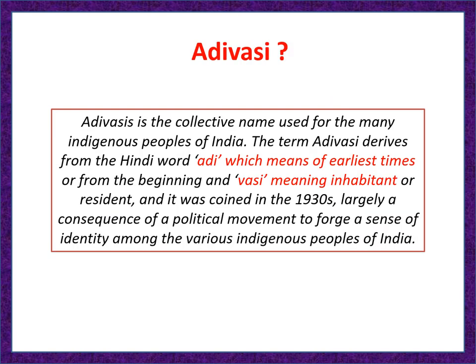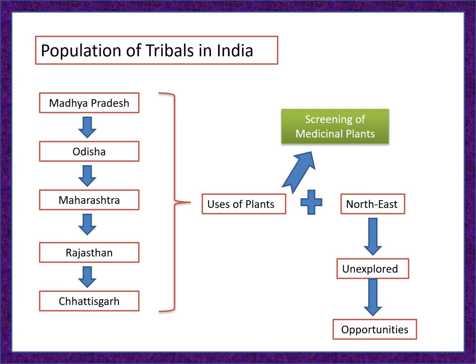The population of tribes in India is maximum in Madhya Pradesh, Odisha, Maharashtra, Rajasthan, and Chhattisgarh. Maximum population means maximum usage of plants, which means maximum ethnobotany.